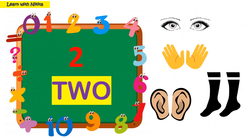This number is 2 and its number name is TWO. Let's see examples related to this: two eyes, two hands, two ears, two legs.